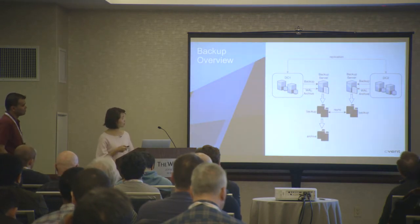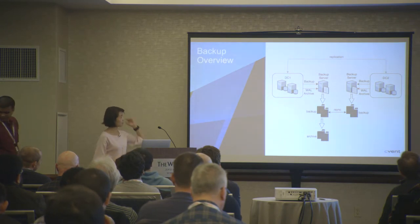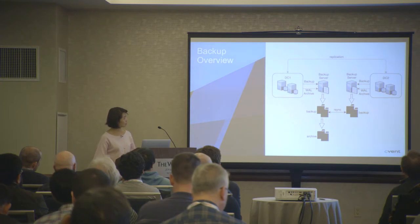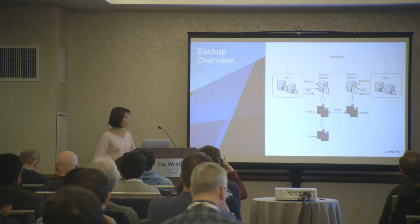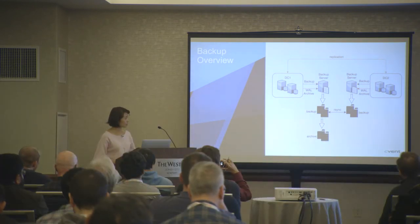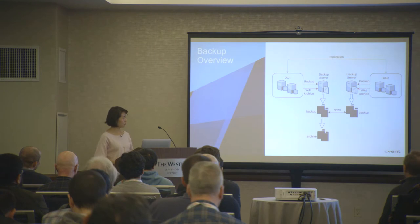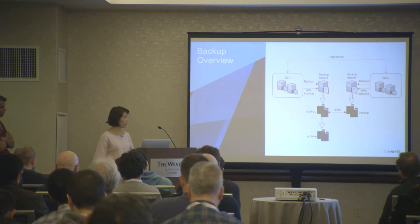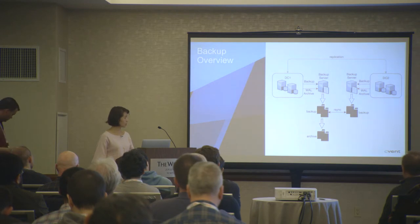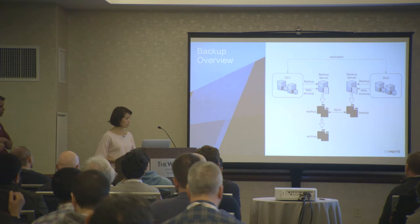We have two major data centers: one is the production data center, the other is a lower region and disaster recovery region where we replicate our data from production. For each data center, we have a backup server where we take the backups and WAL archives. The backups re-sync between the two backup servers so that one backup is persisted on both. Because we don't want to keep too much data, we have a retention policy where backups older than seven days get purged. On the production server, there is also an archive folder that stores older backups.